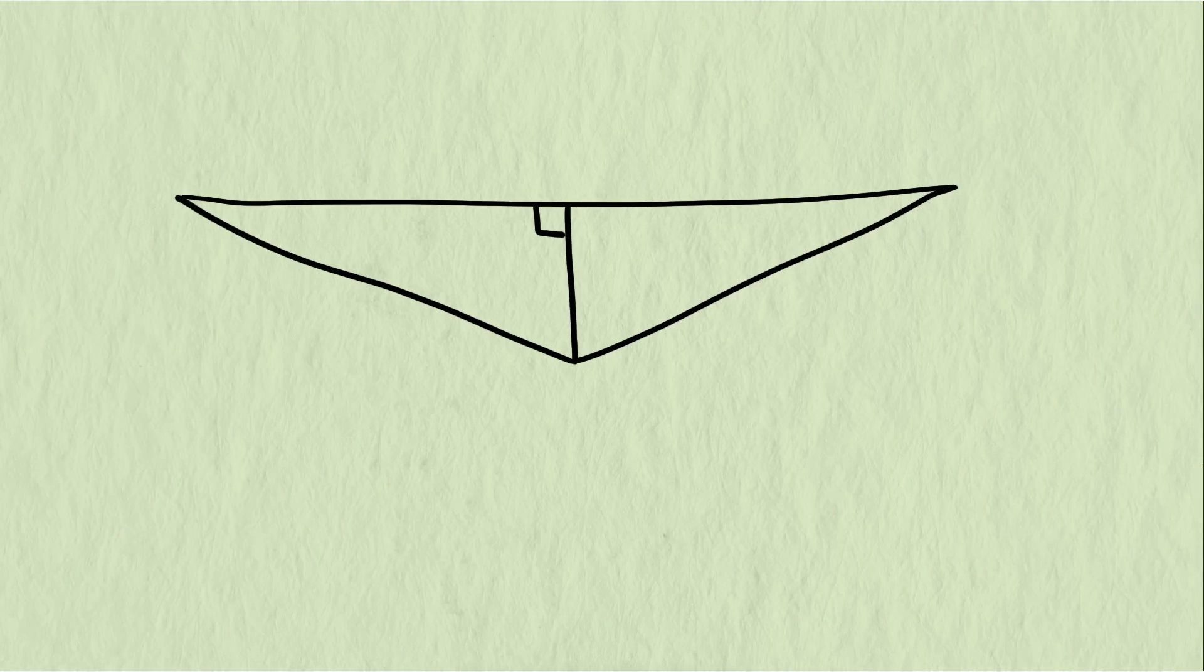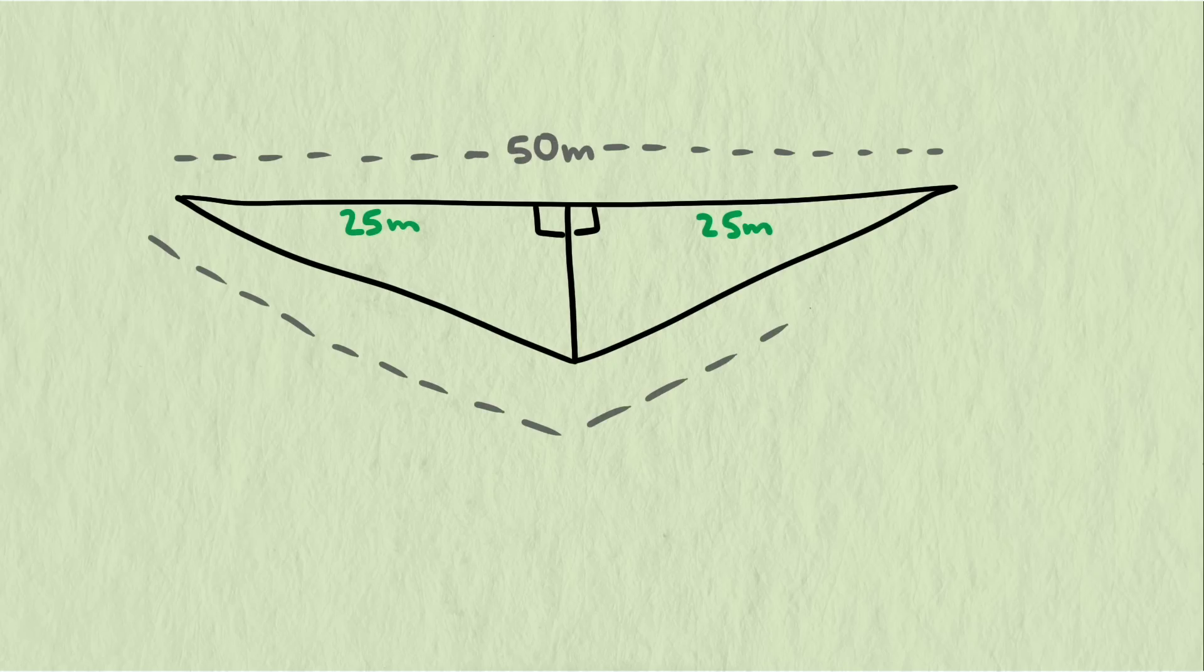The first one can be calculated using the Pythagorean theorem. We can draw in two right triangles. We know the old length of the rope was 50 meters, making these legs each 25 meters, and we know that the new length of the rope is 51 meters, making the hypotenuse of each 25 and a half meters.